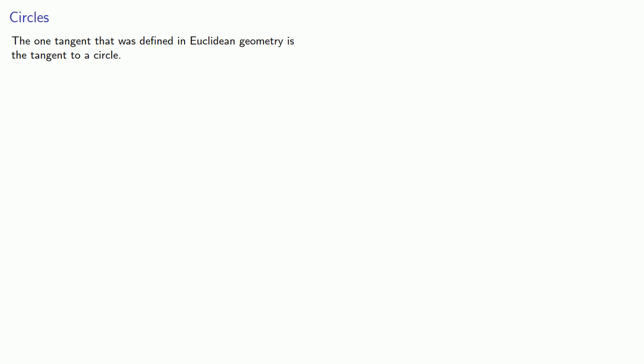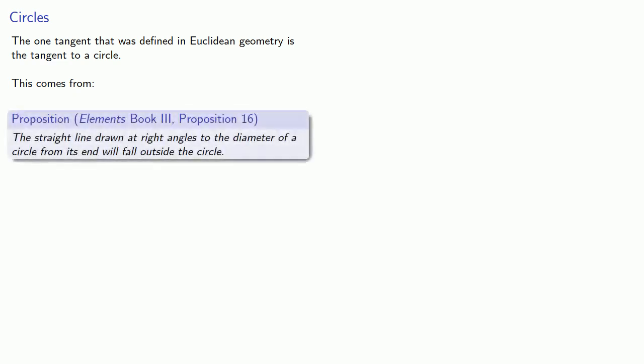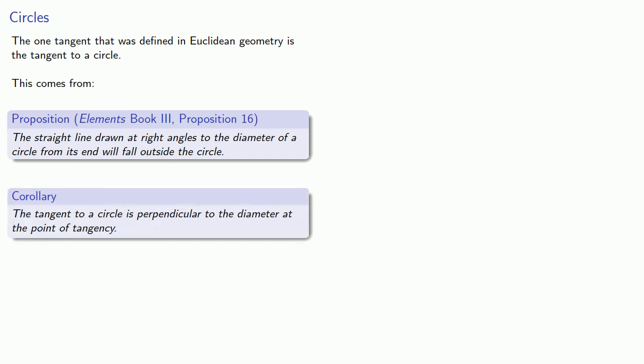The one tangent that was defined in Euclidean geometry is the tangent to a circle. And this comes from the Elements, Book 3, Proposition 16: the straight line drawn at right angles to the diameter of a circle from its end will fall outside the circle. And as a corollary to this, the tangent to a circle is perpendicular to the diameter at the point of tangency.